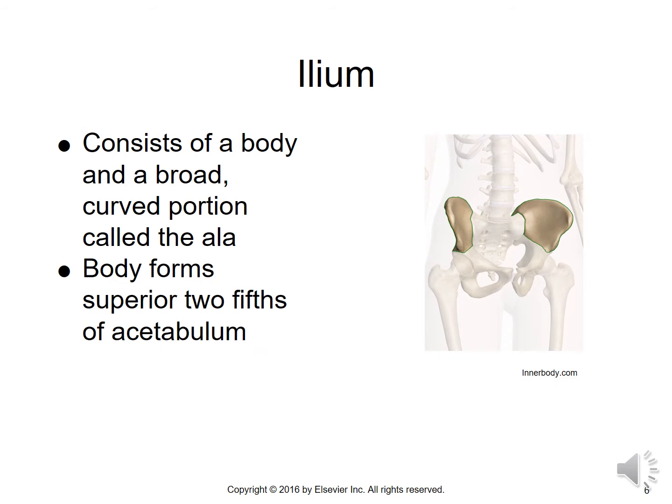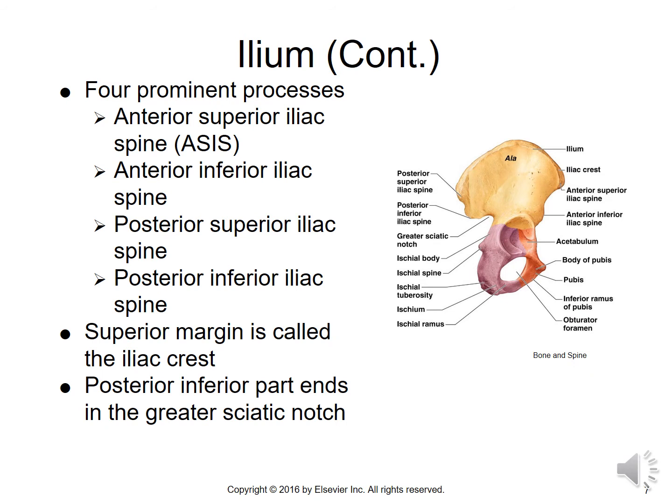The ilium consists of a body and a broad curved portion called the ala. The body forms the superior two-fifths of the acetabulum. So if you were to take the acetabulum and dissect it almost into the shape of the letter Y, the top two-fifths of that Y would be the ilium.